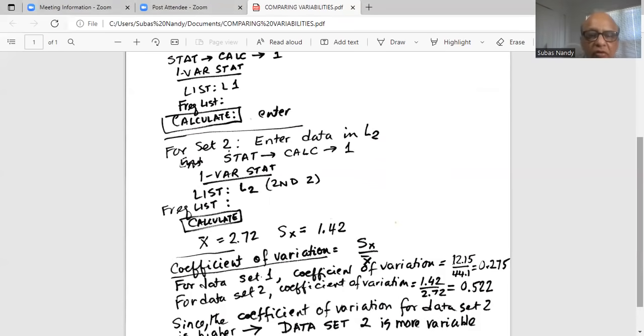Now we are going to calculate coefficient of variation for each of the data set. For data set one, coefficient of variation is 12.15, the standard deviation divided by the mean, which is 44.1. And that answer is 0.275.